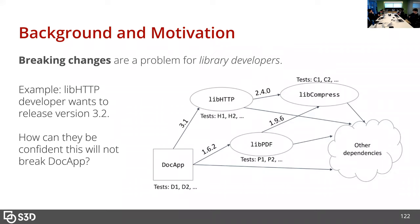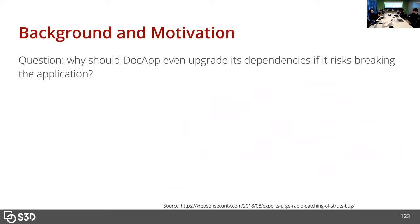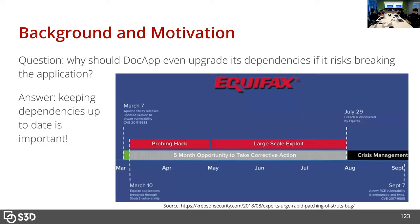One common term in software development is dependency health — managing whether upgrading a library dependency will break your application. Another question is: why should a doc app even upgrade its dependencies if they have a working version? A famous example is the Equifax data breach. Equifax depended on a third-party library called Apache Struts, which released a security patch around March 7th that thwarts a vulnerability. Equifax did not update their dependency for a few days, and then the data breach started. The moral is: you want to keep your dependencies up to date since security patches can be extremely important.